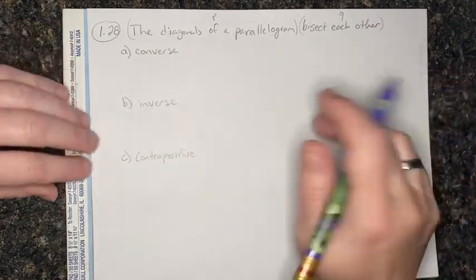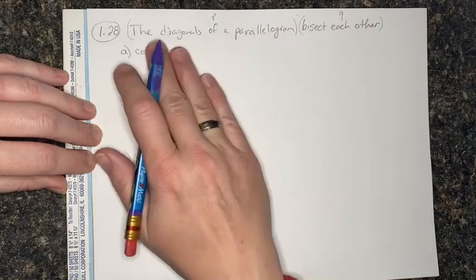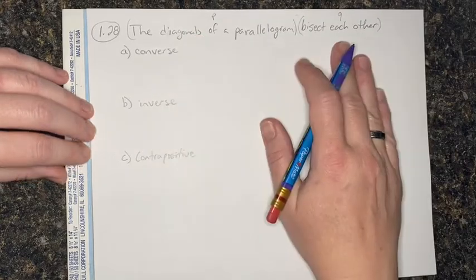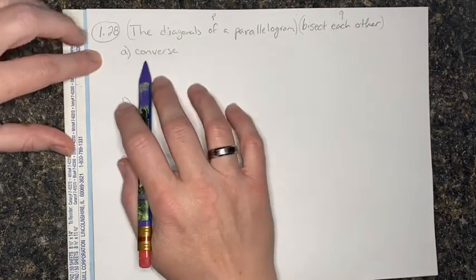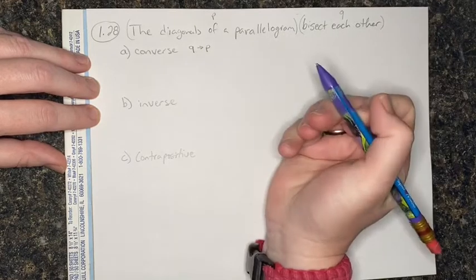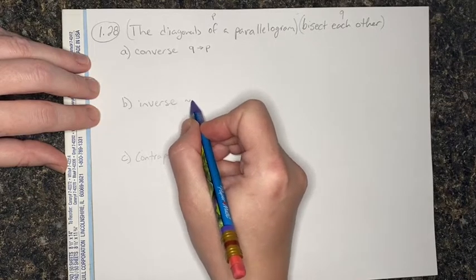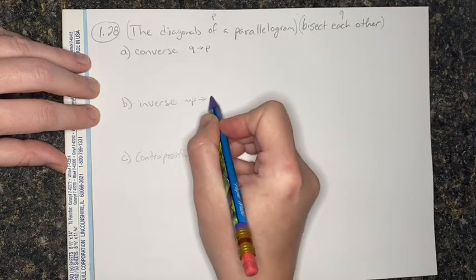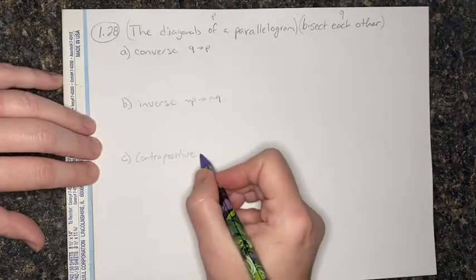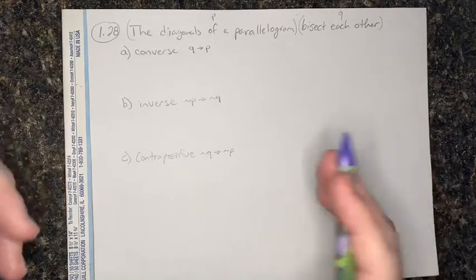The diagonals of a parallelogram are something that exists, and the fact that they bisect each other is something that exists. These are our two different parts — the diagonals of a parallelogram and them bisecting each other — our P and our Q. If you look back at your truth table, the converse is basically saying if Q, then P. The inverse is saying if not P, then not Q. And our contrapositive is saying if not Q, then not P.